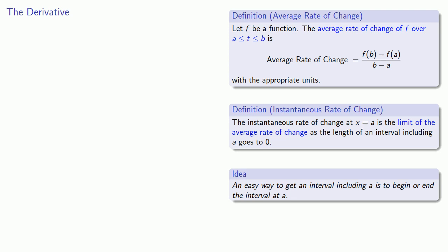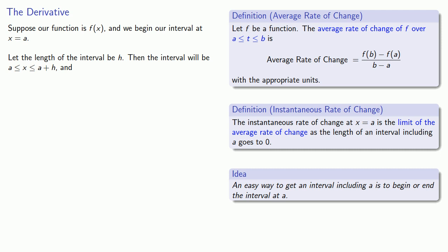So suppose our function is f(x) and we begin our interval at x equals a. Let the length of our interval be h. Then the interval runs between a and a plus h, and our average rate of change is going to be our function evaluated at the end minus our function evaluated at the beginning, over the difference between the two endpoints, a plus h and a, which is just going to be h.